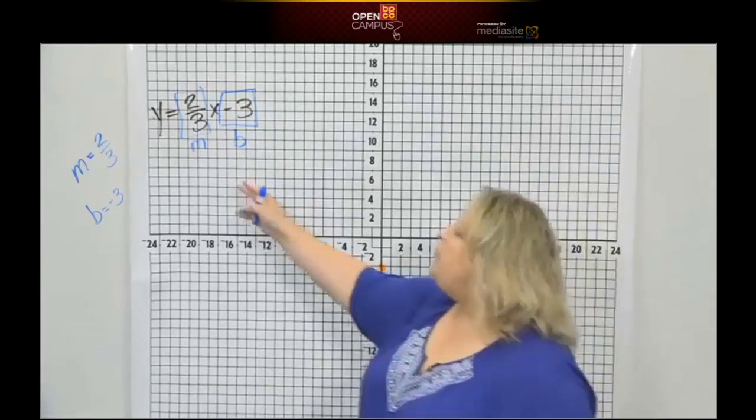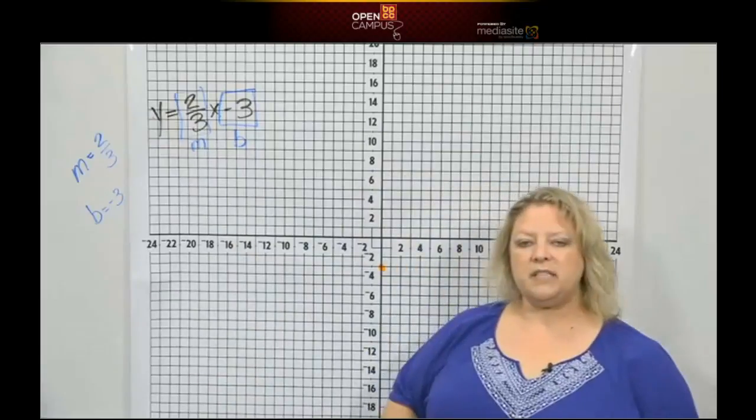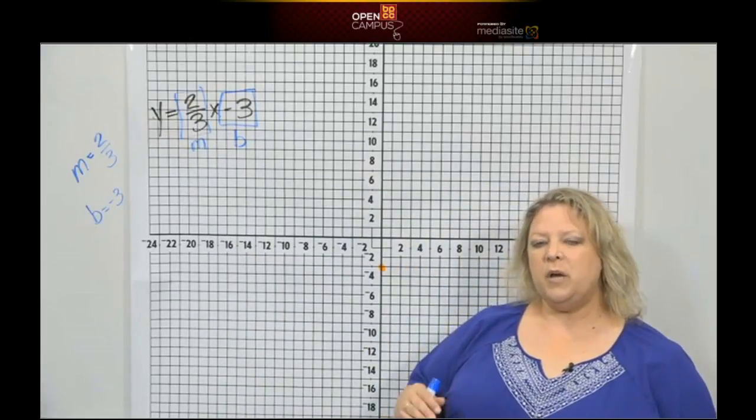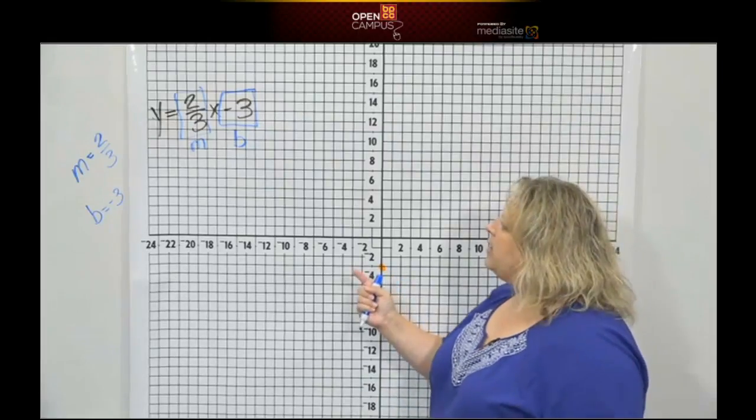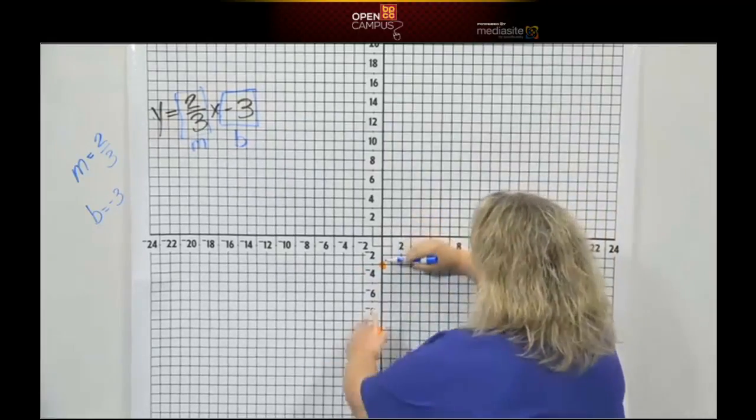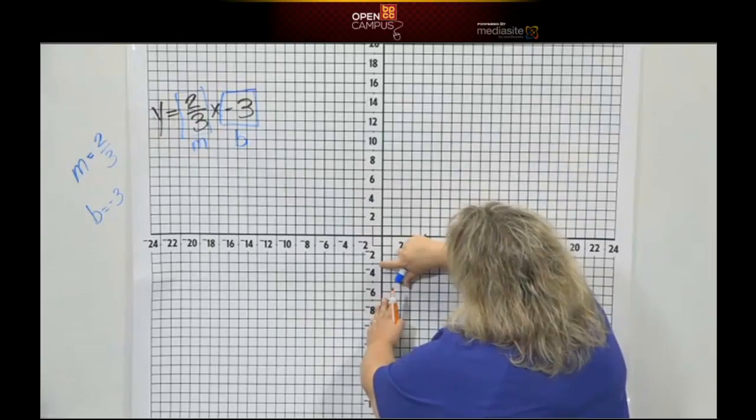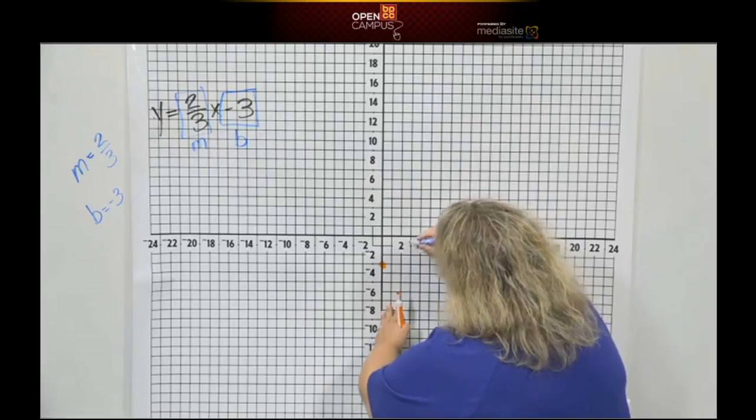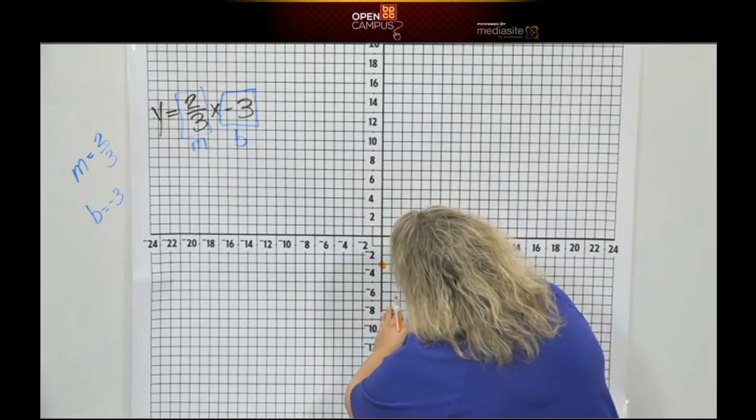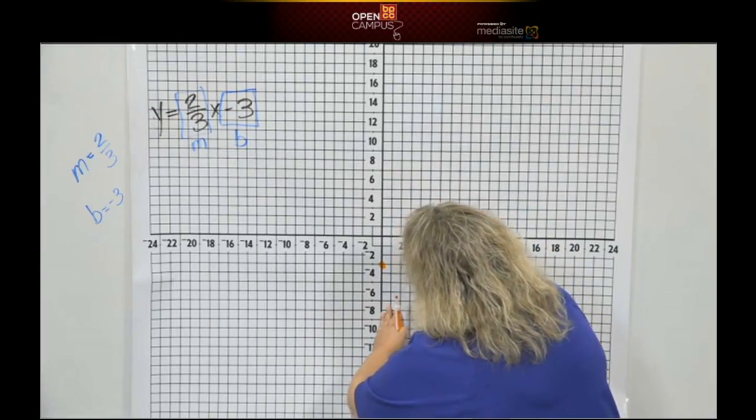My slope is a positive two-thirds. Remember that slope means move. So we're going to move from this point. From this point, I'm going to move up two because it's a positive two. So I'm counting up two, one, two, and I'm running three. One, two, three. And so that's where my point goes, right there.